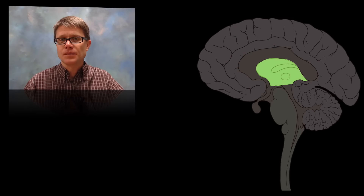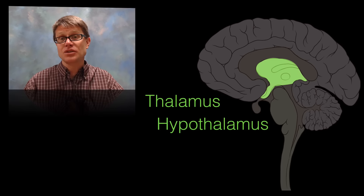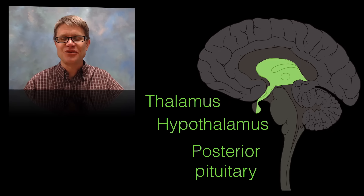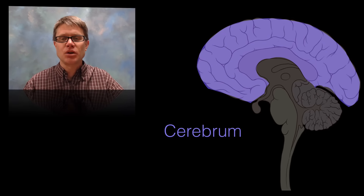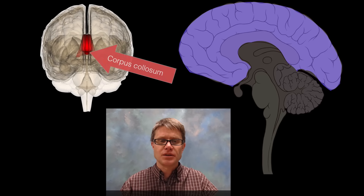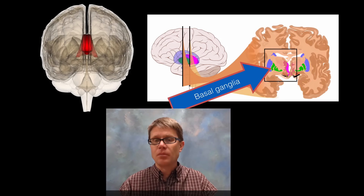Right above the brain stem sits the thalamus, which sorts information as it moves up to the upper parts of the cerebrum. Below that is the hypothalamus, responsible for homeostasis — maintaining that internal body state. Hanging off the bottom is the posterior pituitary. Moving up, the upper portion is called the cerebrum. The connection between the two hemispheres is called the corpus callosum. The nuclei found below the cerebrum are called the basal ganglia, which are really important in motor control.